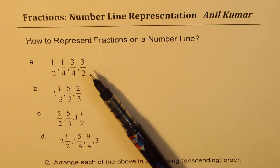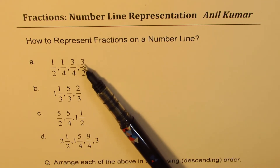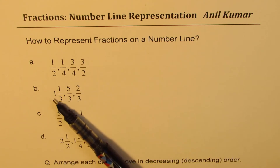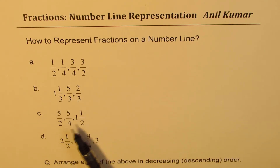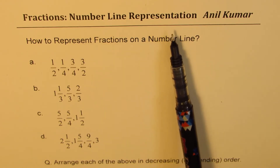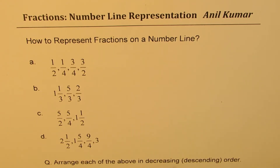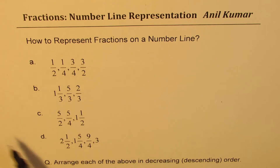We have taken up different kinds of fractions. We have 3 over 2, which is an improper fraction. We have 1 and 1 over 3, which is a mixed number, and then a combination of all of them. This video will help you understand how to place fractions on a number line. I would like you to pause the video, try to place these fractions on a number line, and then look into my suggestions.